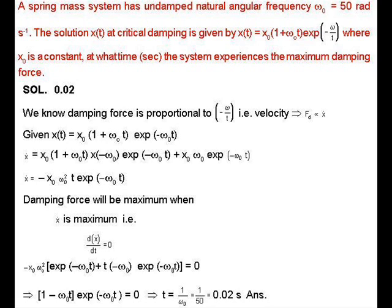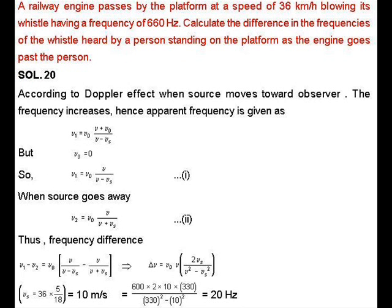For maximum condition, dẋ/dt should be 0, because for any system at maximum or minimum, the first derivative with respect to any variable should equal zero. From here, dv/dt = 0, then t = 1/ω₀, which equals 0.02 seconds.